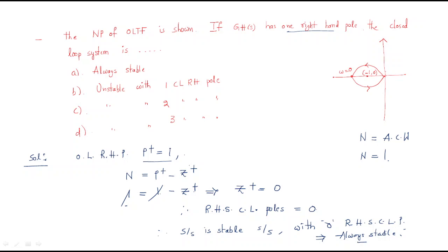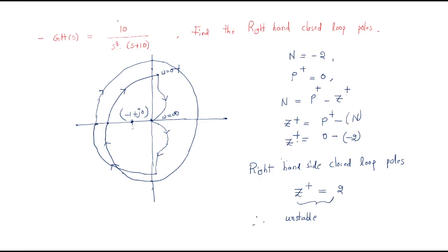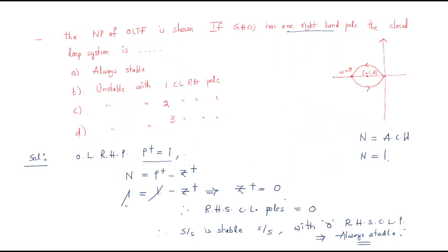In the first problem, when the transfer function is directly given, draw the open-loop Nyquist plot, find the encirclements, and use the open-loop right-hand side poles from the transfer function to determine Z-plus, the closed-loop right-hand side poles. Whenever the closed-loop transfer function has right-hand side poles, the system is unstable. These are different models useful for understanding the Nyquist plot concept. I hope all of you understand this session. Thank you.